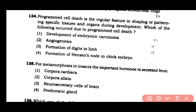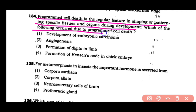Question number 134: Programmed cell death is a regular feature in shaping or patterning specific tissues and organs during development. Which of the following occurs due to programmed cell death? (1) Development of embryonic carcinoma, (2) angiogenesis, (3) formation of digits in the limb, (4) formation of Hensen's node in chick embryos. The correct answer is option 3. The membrane between limb digits is eliminated by apoptosis, which is programmed cell death, resulting in the development of individual digits.